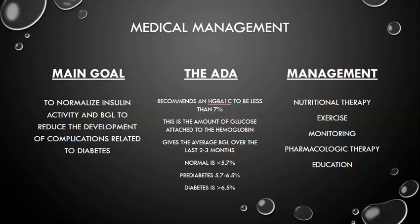Our main goal for diabetic patients is to normalize their insulin activity and regulate blood glucose levels. We want to reduce the development of complications related to diabetes — your diabetic neuropathy, kidney function that can result from uncontrolled diabetes. As long as we can control the patient's insulin and keep their blood sugar levels within normal limits, we can hopefully prevent complications from developing or minimize their severity.